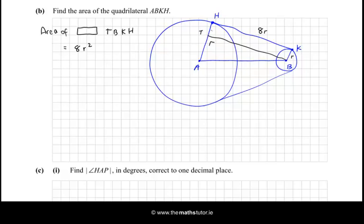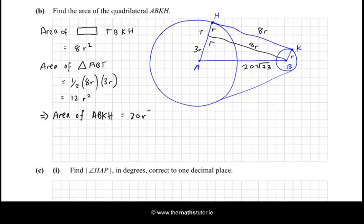Okay, and then we have the triangle. So this is R. This is 3R down here, and this over here is 20√73. And this is, of course, 8R. So the area of the triangle, and we'll call this ABT. That's going to be half the base. Let's call the base 8R by the perpendicular height, which I'll call 3R. So that's... 8 by 3 is 24, and half of that is 12. So it's 12R squared. So the area of the quadrilateral is 20R squared. ABKH is equal to 20R squared. And remember, R is 20. So that's... R squared is 400. So it's 20 by 400, which is 8,000 centimeter squared.